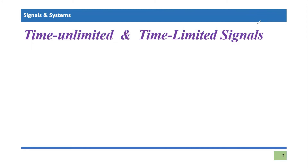Signals are classified on the basis of the time duration for which they last. Time unlimited signals, as their name suggests, are signals for which the time domain is unlimited. These are kind of ideal signals — they last for all time, for all possible points of the time domain. For example, the signal starts from minus infinity and goes to plus infinity in terms of time, meaning the signal was there since the very beginning and will remain there forever.